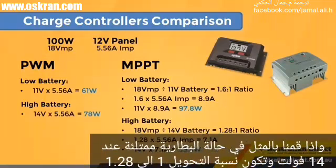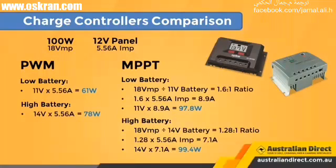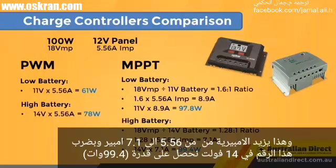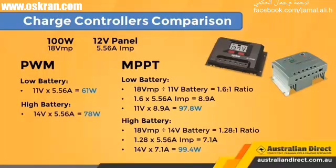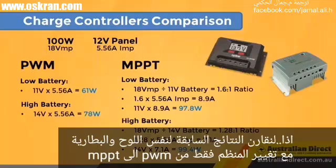Doing that same math for a fuller battery at 14 volts, the in-versus-out ratio works out to 1.28. So that increases the current from 5.56 amps to 7.1 amps. Multiply that times 14 volts — that equals 99.4 watts. So let's compare those two outputs with the same battery and same panel, just going from a PWM to an MPPT charge controller.